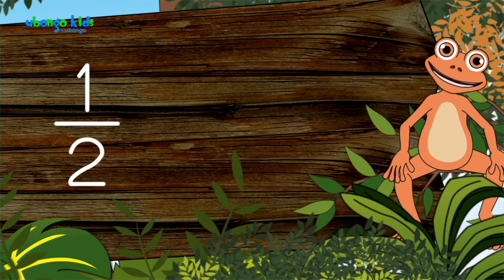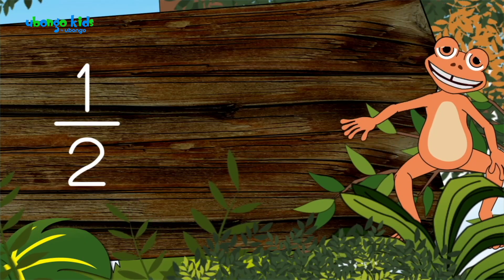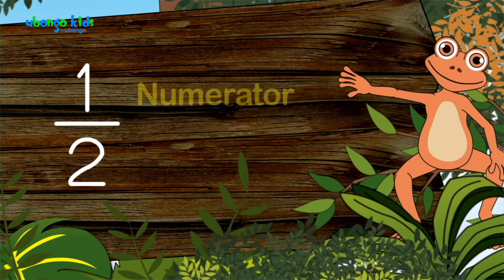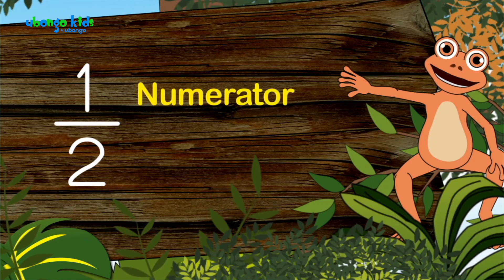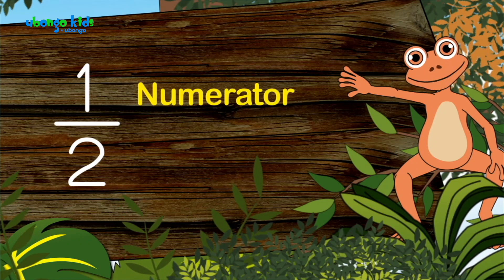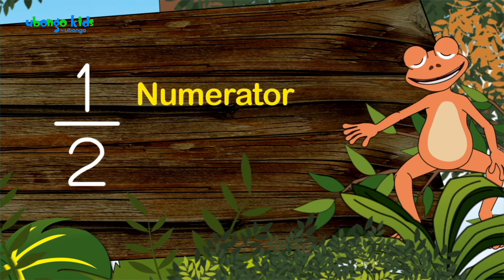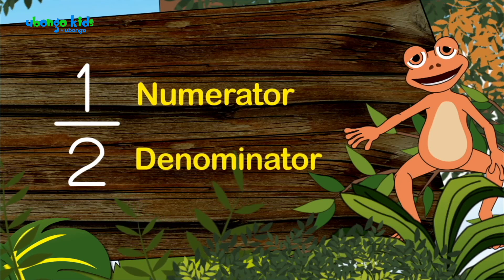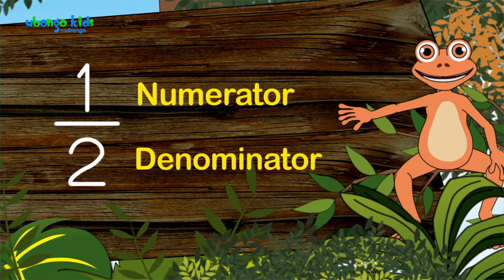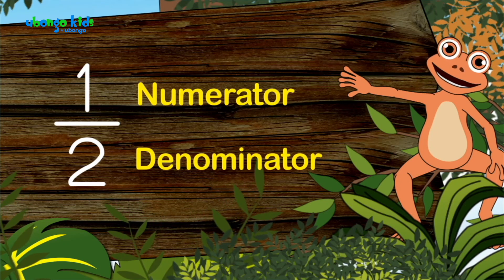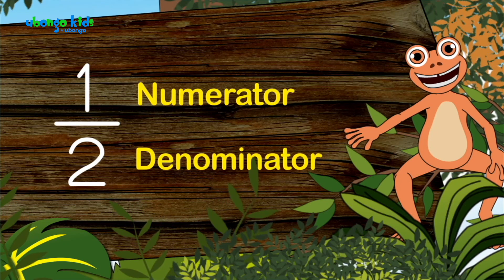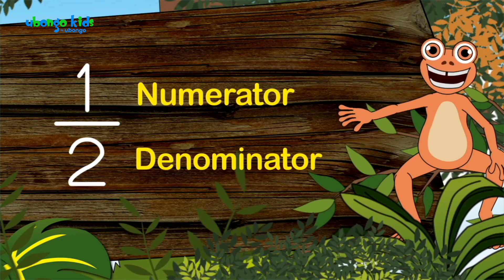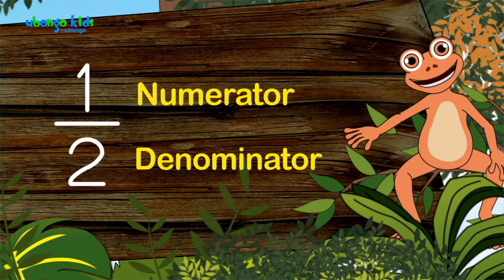In Kiswahili, we call the top number Kiasi, and we call the bottom number Asili. Kiasi, Asili. Numerator, denominator.